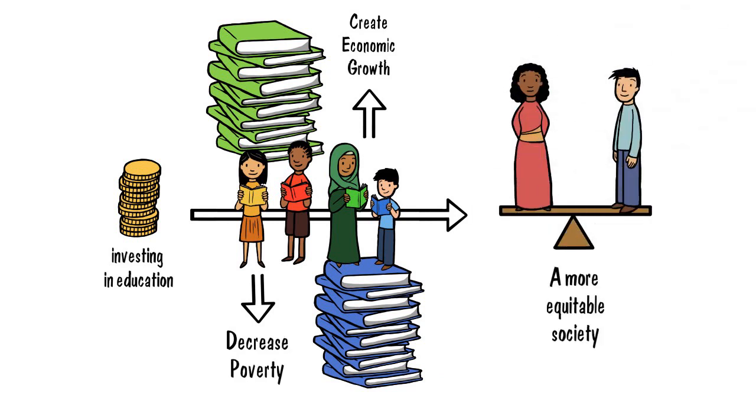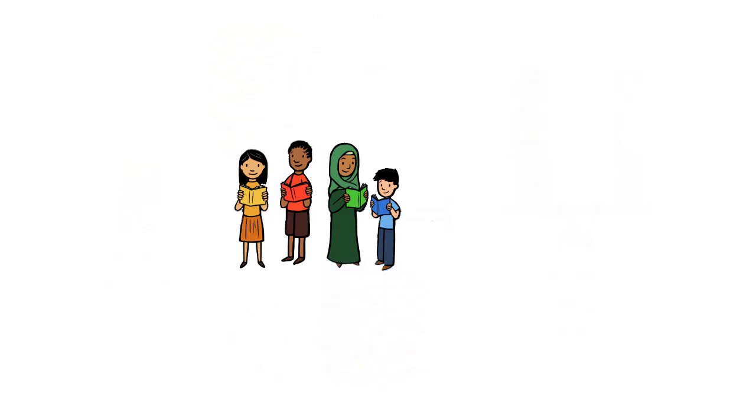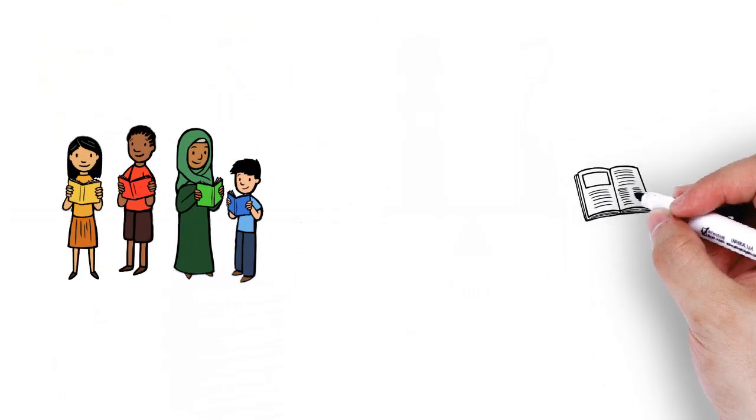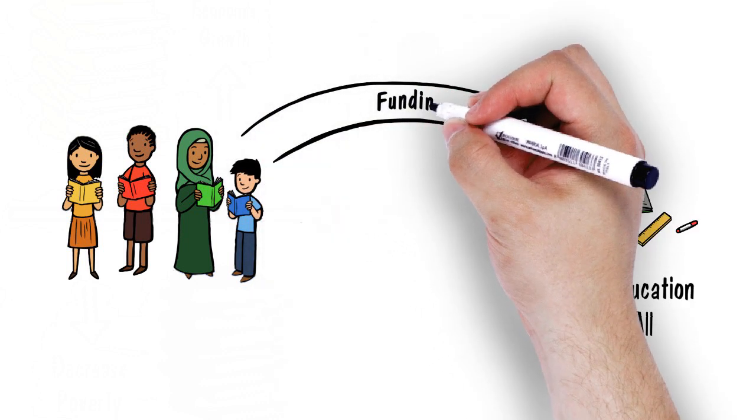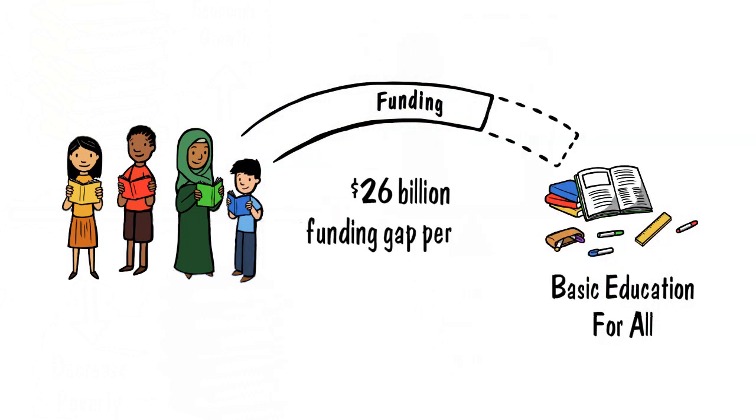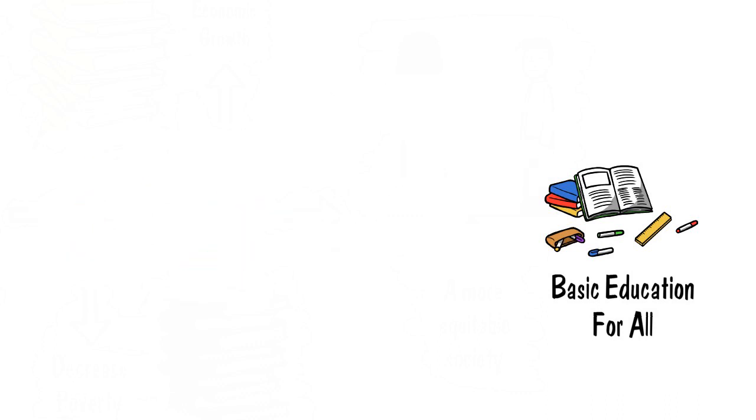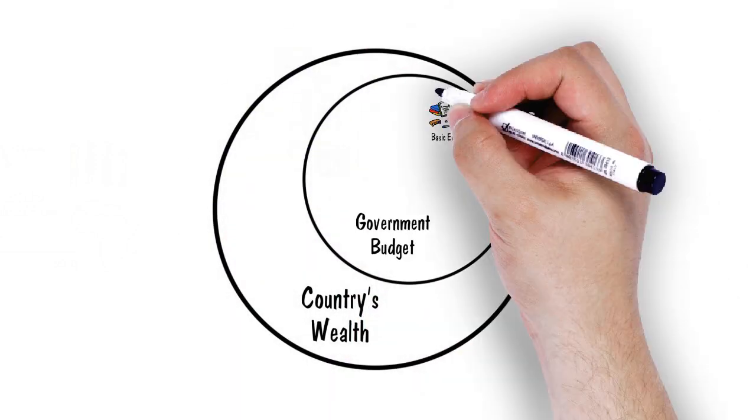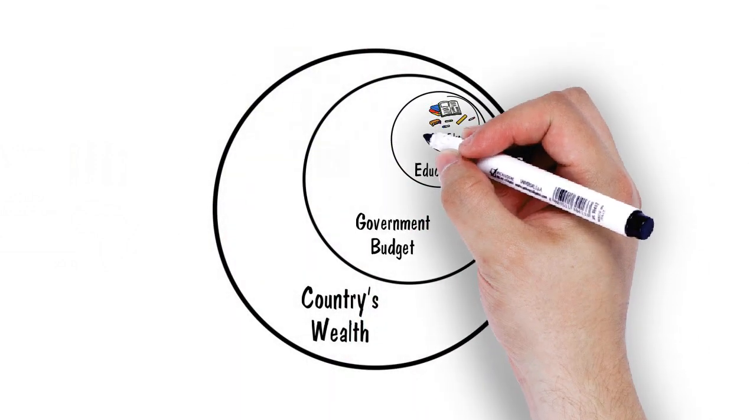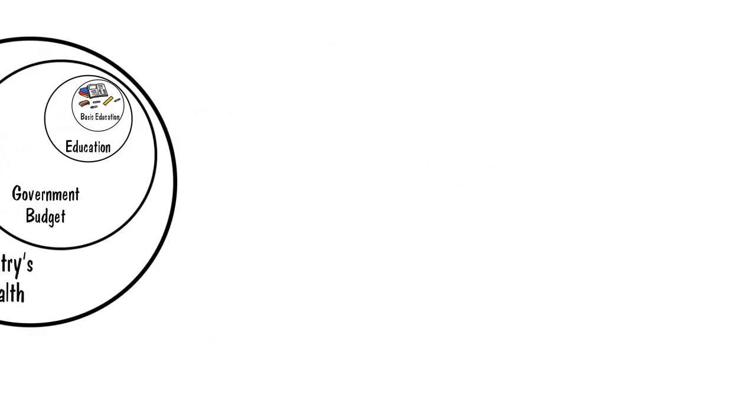Now how do we get there? Well, the world needs to invest a lot more in education than it does now. We need $26 billion more each year to achieve basic education for all in poor countries. In many countries, too little of the country's wealth goes towards education, and too little goes towards basic education.